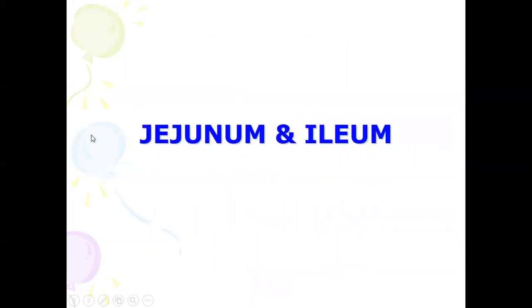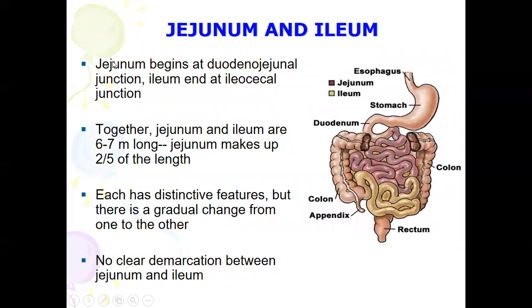Now we move to the jejunum and ileum. The jejunum begins at the duodenojejunal junction and the ileum ends at the ileocecal junction. Together, the jejunum and ileum are about six to seven meters long. The jejunum makes up two-fifths of the length. Both are freely mobile and attached to the posterior abdominal wall by the mesentery of the small intestine.